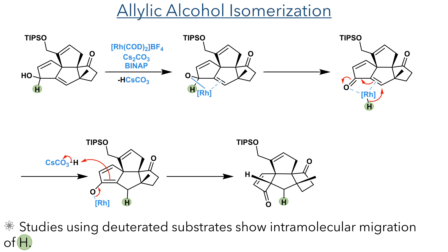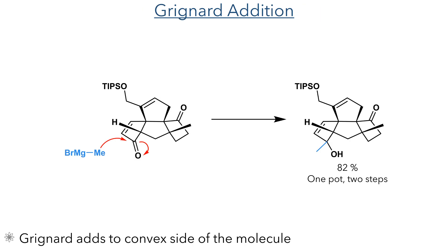The mechanism of this reaction has been studied using deuterated substrates, and these prove the intramolecular migration of the hydride. With the enone complete, methyl Grignard was then added directly to the reaction, and this underwent addition to the convex side of the molecule, forming the target product in an 82% yield.